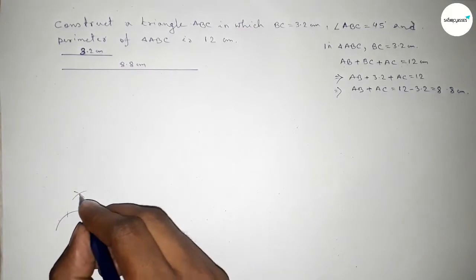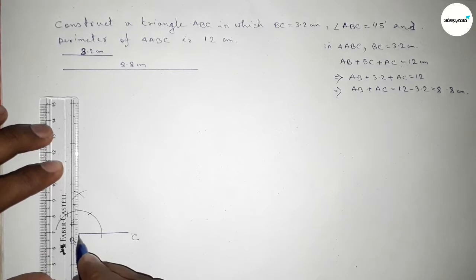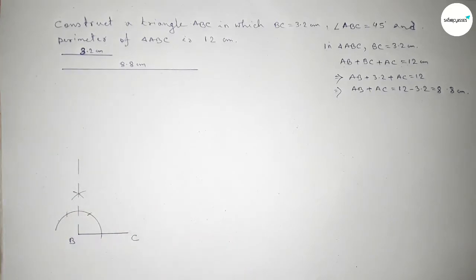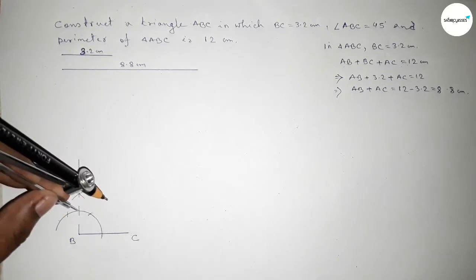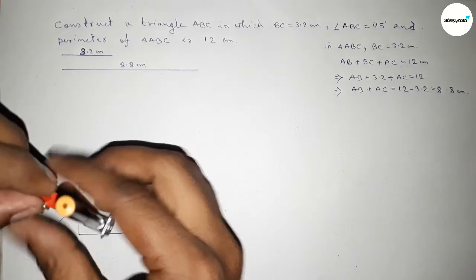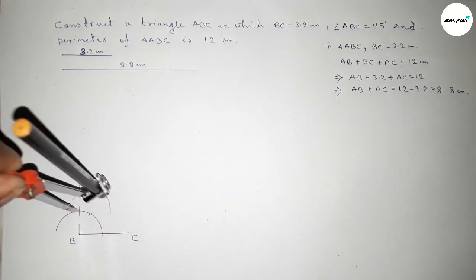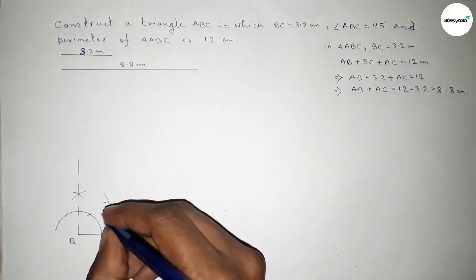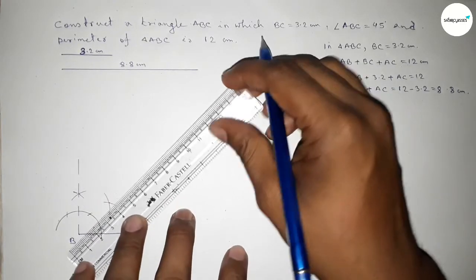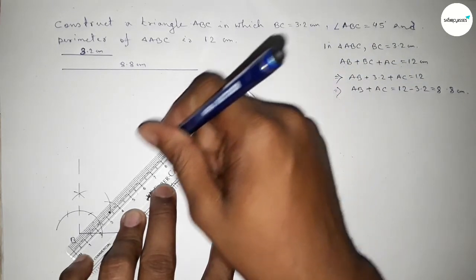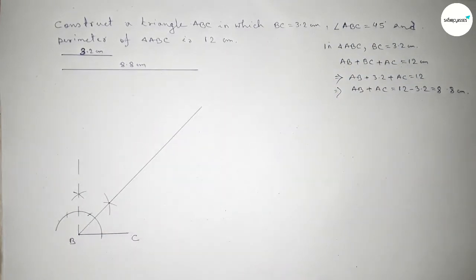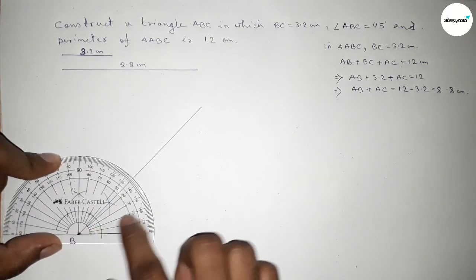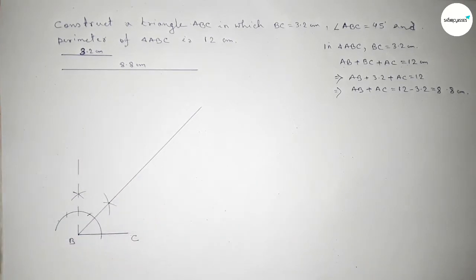Both curves intersect at a point. Joining this line gives a 90-degree angle. Now bisecting this angle: putting the compass here, taking greater than half, and drawing an arc with the same length. Both curves intersect at a point. Joining this line gives 45 degrees. Checking this angle — it is perfectly a 45-degree angle.